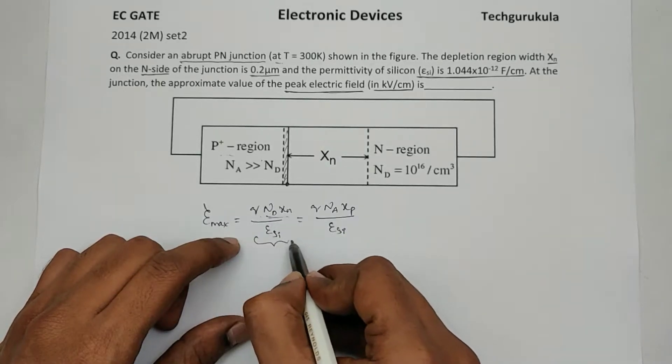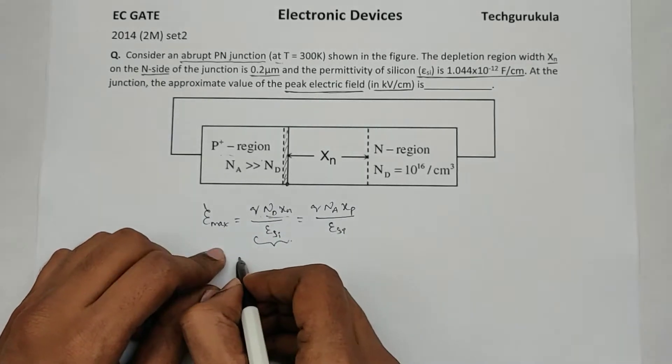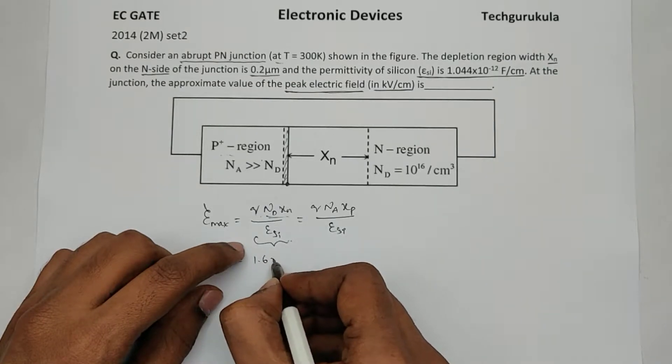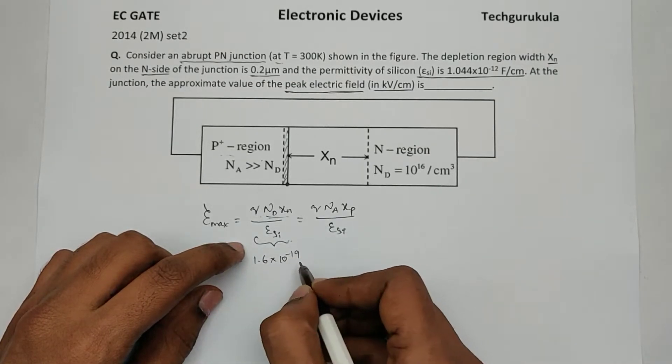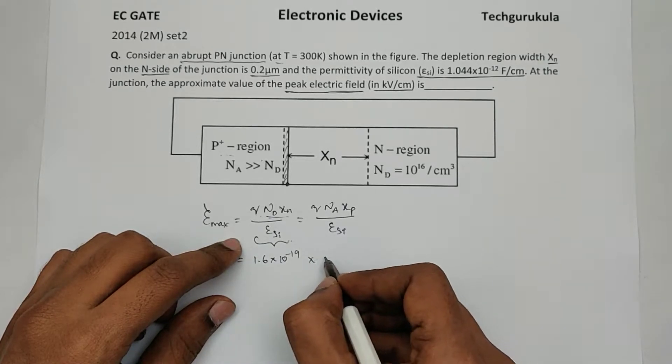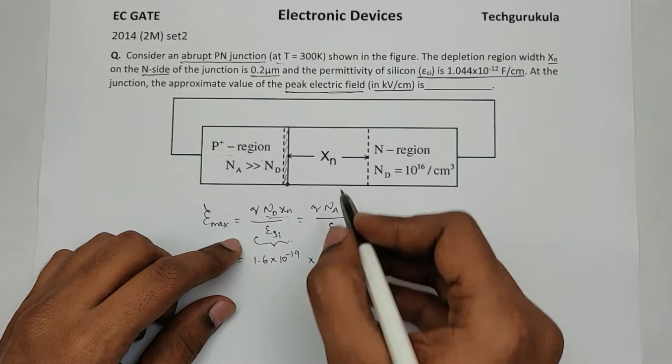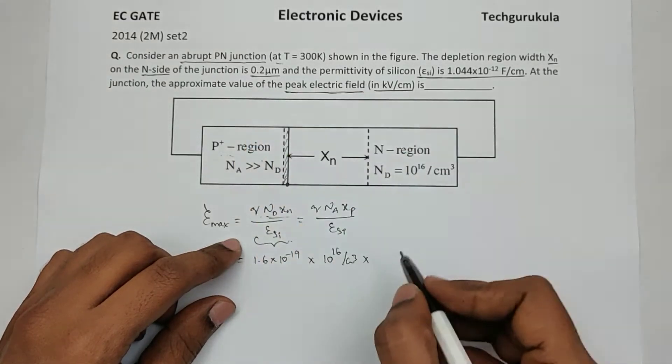Now because we know the values of N_D and X_n, we are going to use this formula. Okay, so this value is given by 1.6 times 10^-19 times the N_D is given 10^16 per centimeter cube times the depletion width X_n is given 0.2 micrometers.